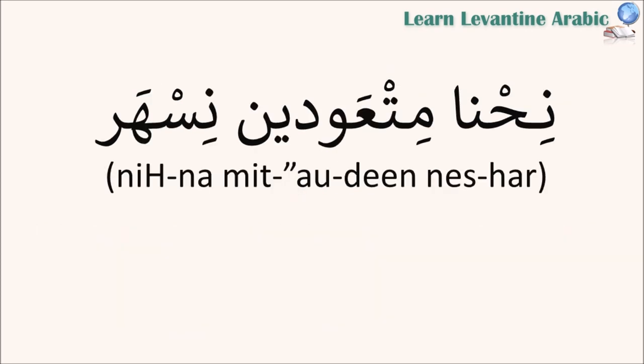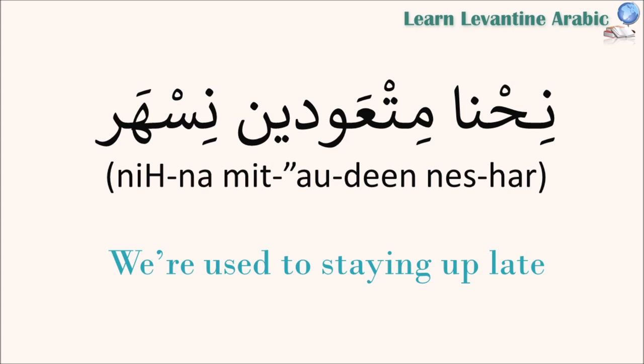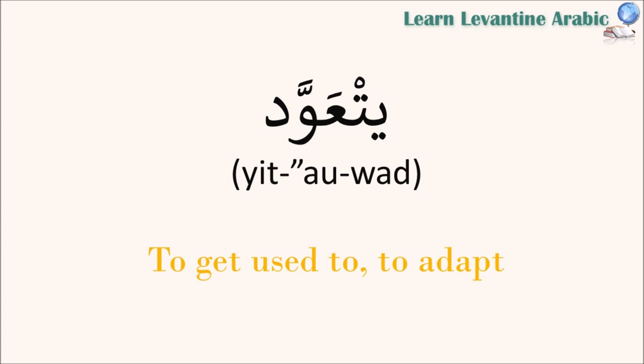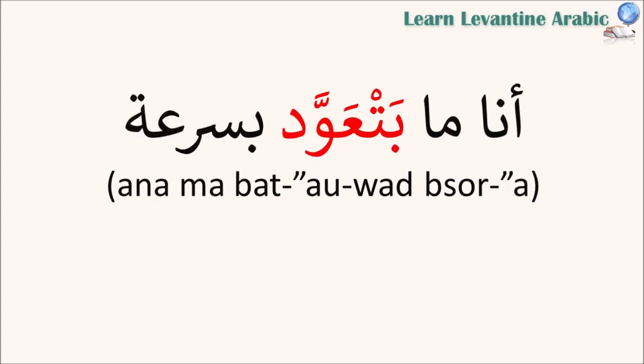Here's another example with the plural: 'We're used to staying up late.' The word 'متعود' comes from the verb 'تعود', so we can also use the verb form. For example: 'I don't get used to things quickly' or 'I don't adapt quickly.' The verb 'تعود' means to get used to something or to adapt to something. In this example we are conjugating the verb in the present tense.